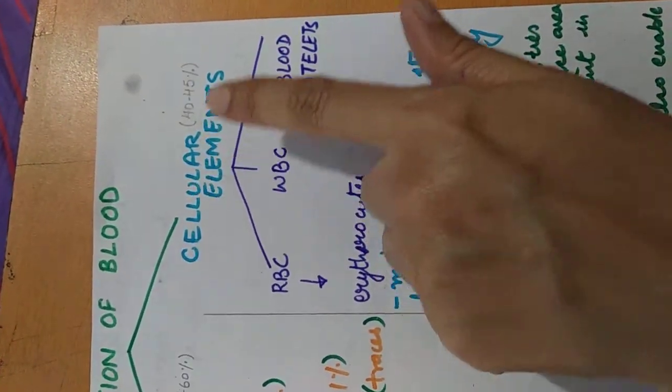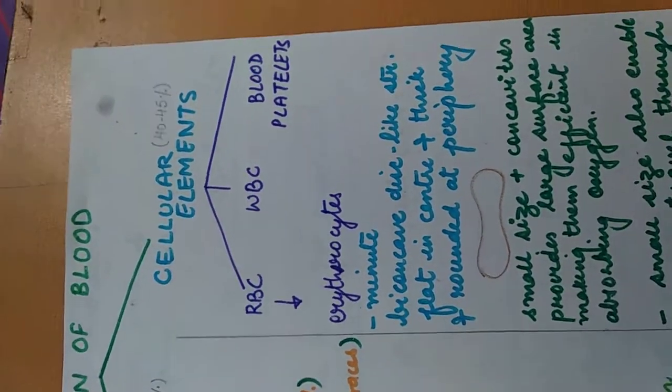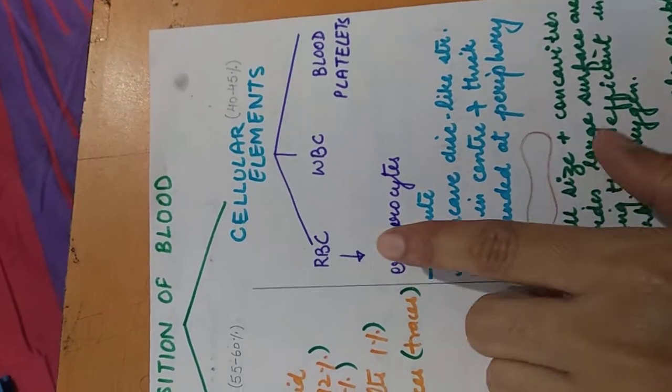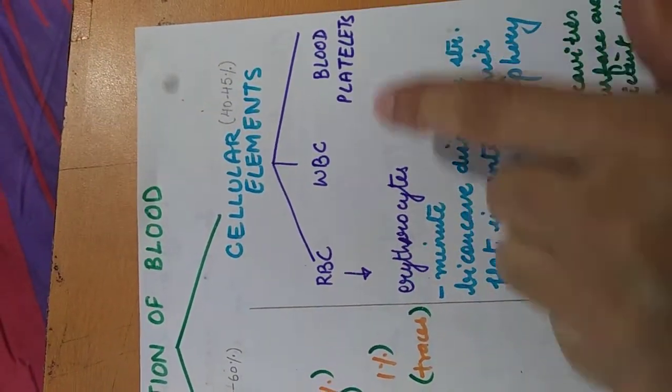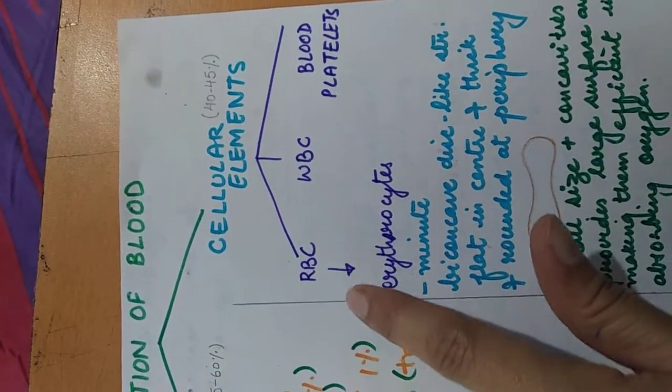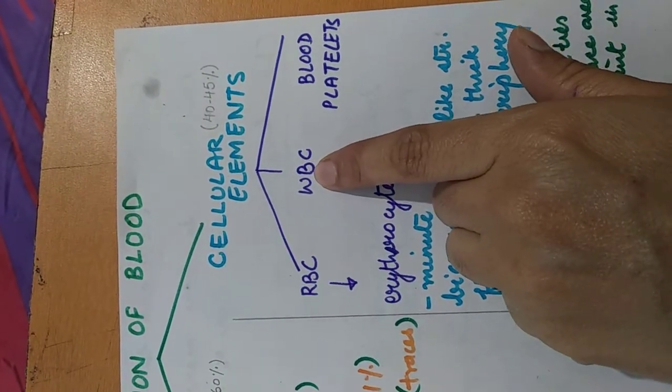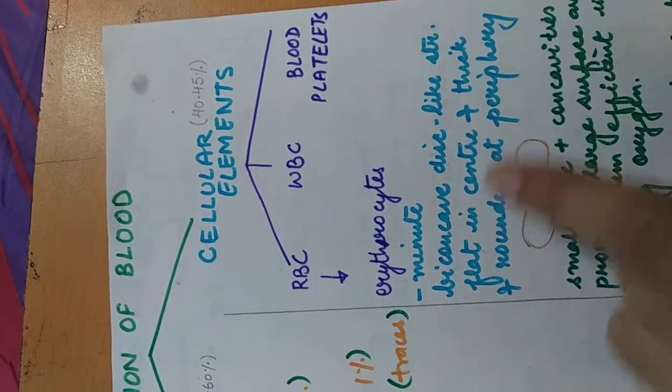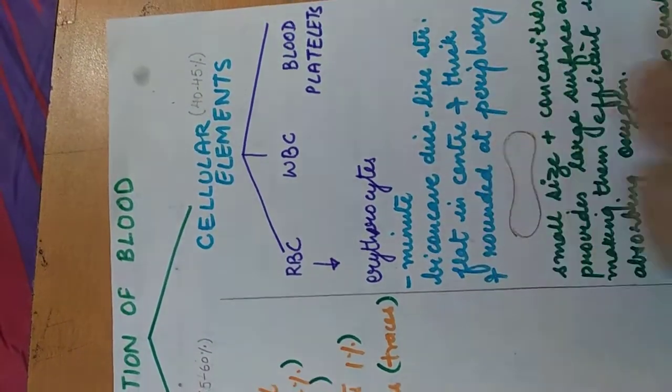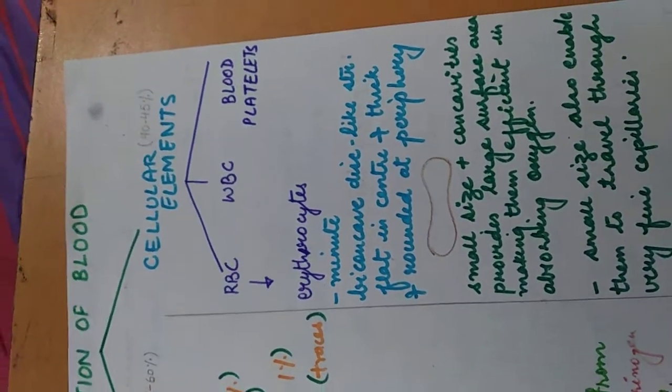Then the other component, the second component of blood, the cellular elements. These cellular elements are of further three types: RBC means red blood cells, WBCs means white blood cells, and blood platelets. We will discuss all of them one by one. In today's video we will learn about the RBCs.